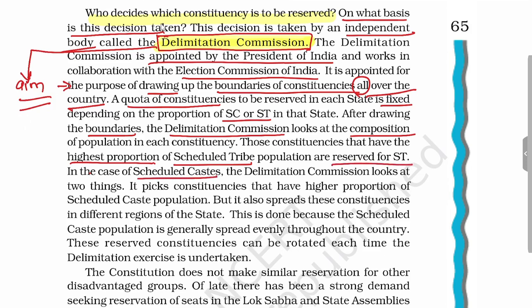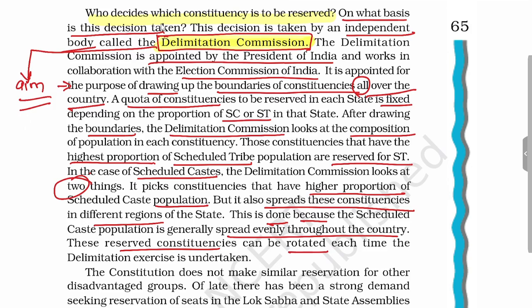In case of Scheduled Castes, the Delimitation Commission considers two things: whether they have a higher proportion of population and whether that population is spread across different regions of the state. Since SC population is generally evenly spread throughout the country, reserved seats are rotated regularly so that SC people from all different communities can have their representation.